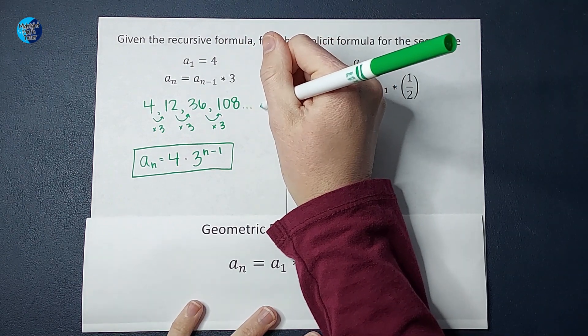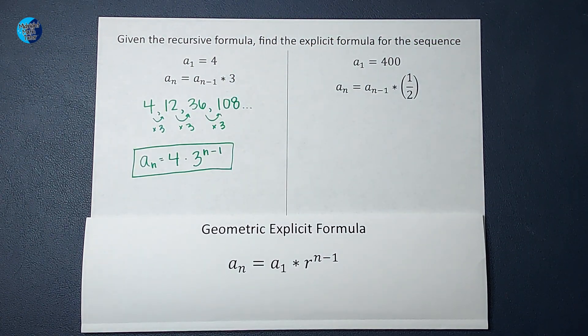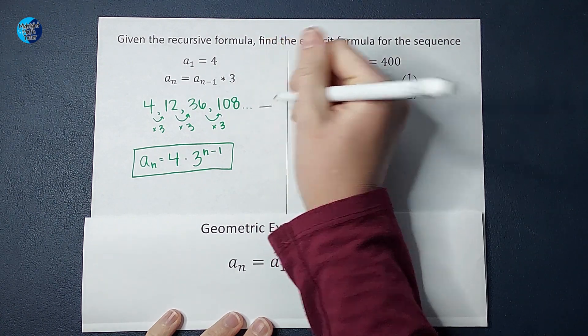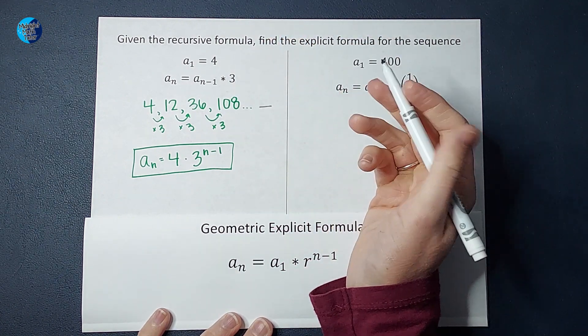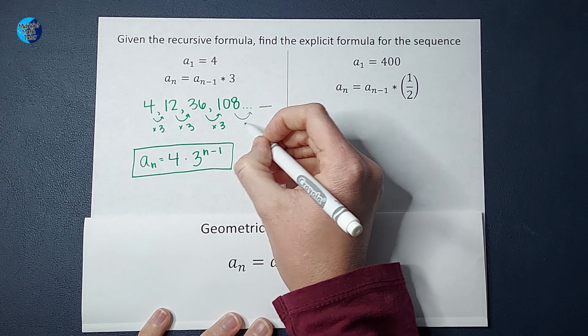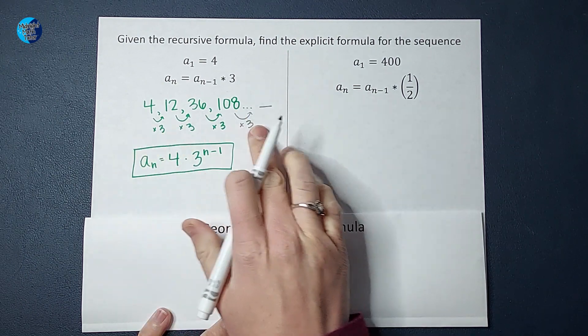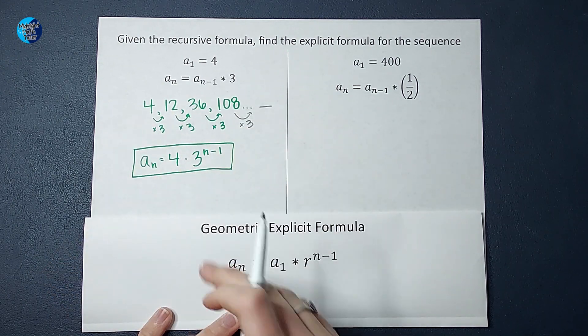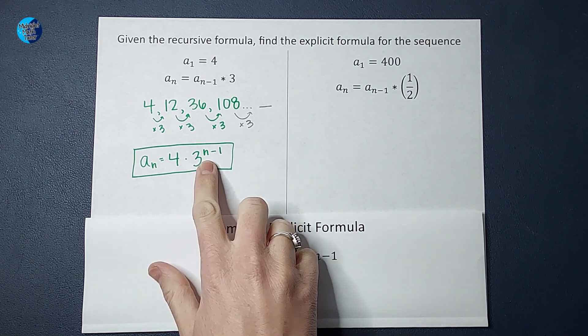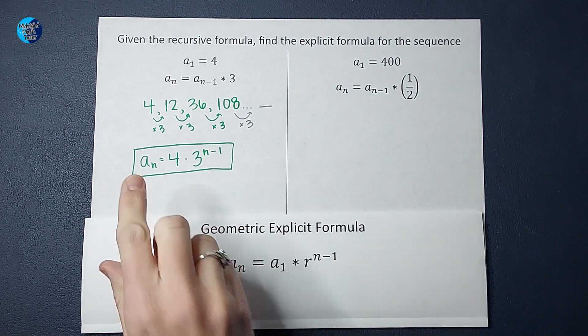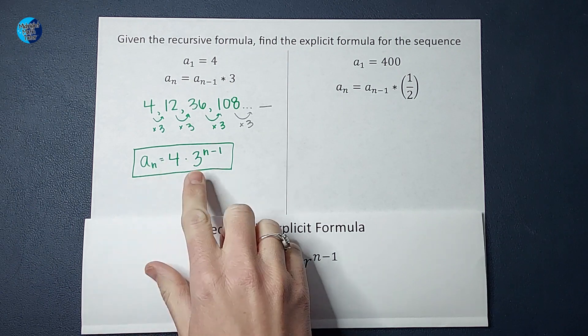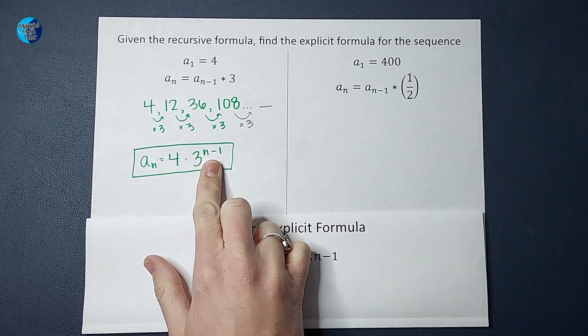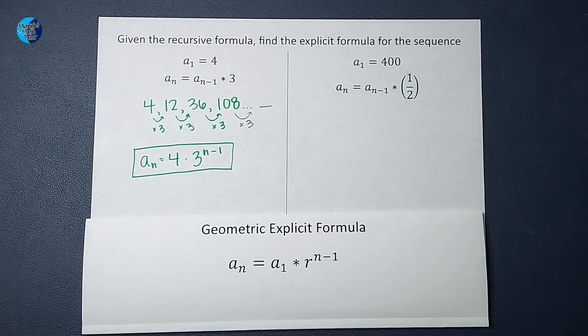Remember, if I was trying to find the next number in this sequence, the fifth number, I would multiply by three how many times? I would multiply by three again. So to get the fifth term, I would have multiplied by three four times. So that's why it's n minus one. If I want to find the fifth term, I would multiply by three four times, which is five minus one. All right, isn't that cool?